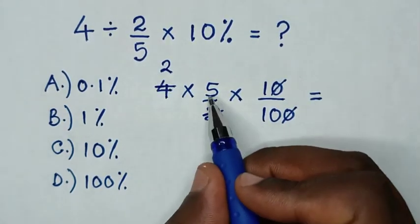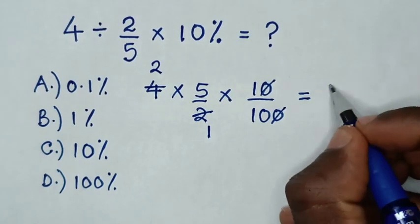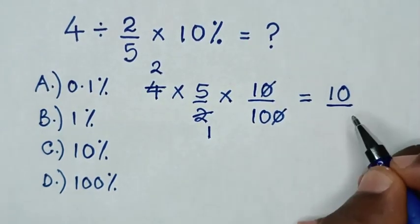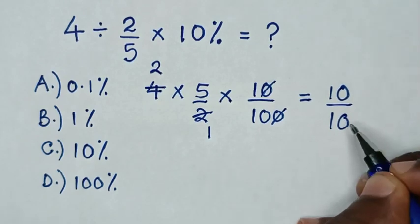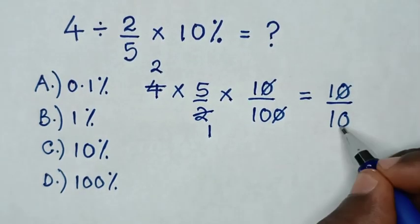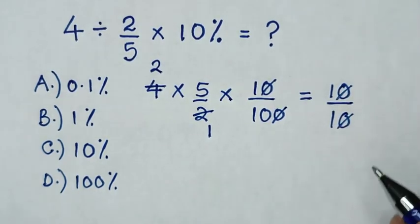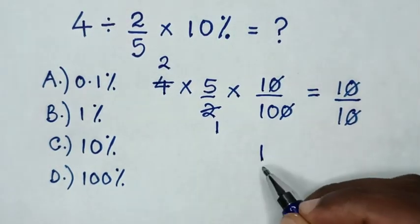So, it will be 2 times 5 is 10, over 1 times 10 is 10. Then, to simplify, this 0 will cancel with this 0, so 1 over 1 is 1.